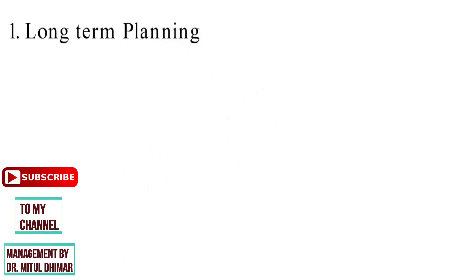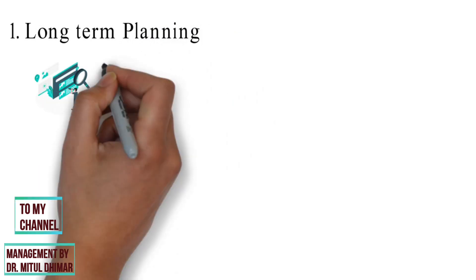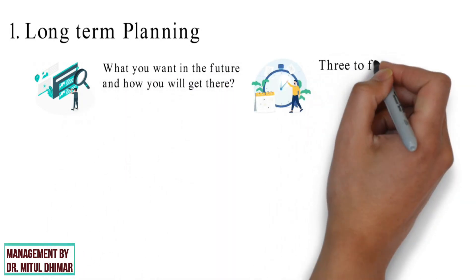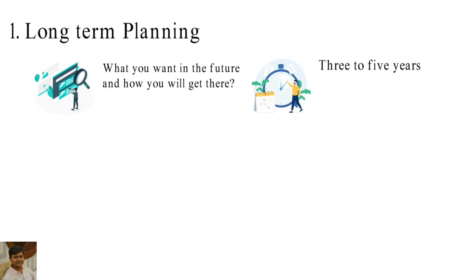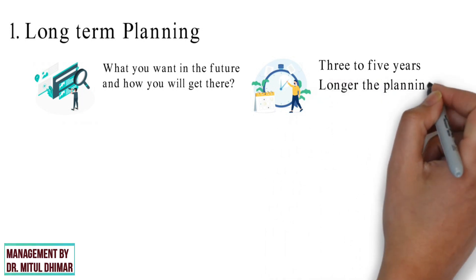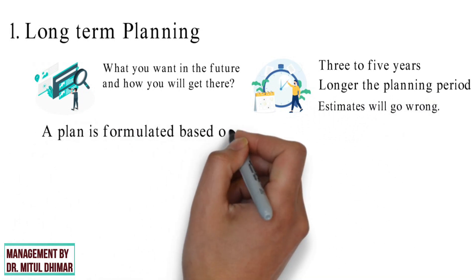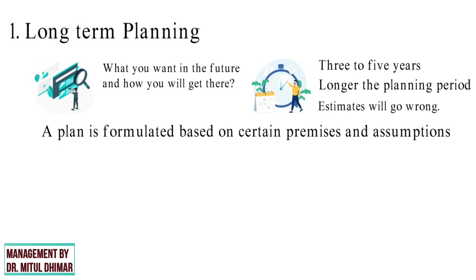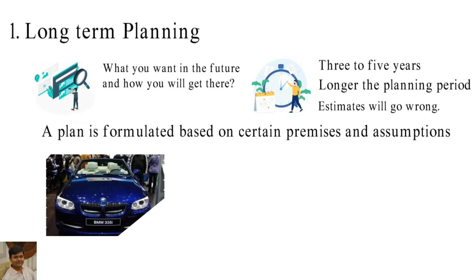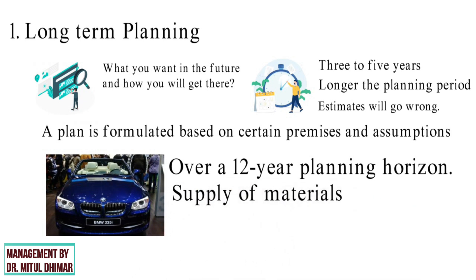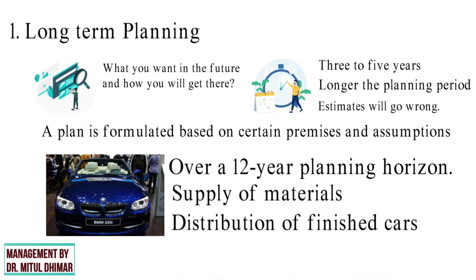Long-term planning is a way of identifying what you want in the future and how you will get there. Its period varies from 3 to 5 years, although in some cases it can cover a period of more than 5 years. The longer the planning period, the greater the chance that estimates will go wrong. A plan is formulated based on certain premises and assumptions. For example, BMW's allocation of various products to global production sites over a 12-year planning horizon includes supply of materials as well as distribution of finished cars to global markets.